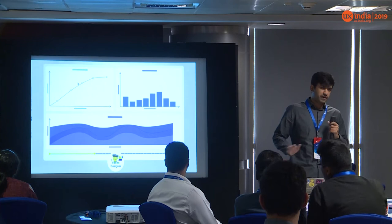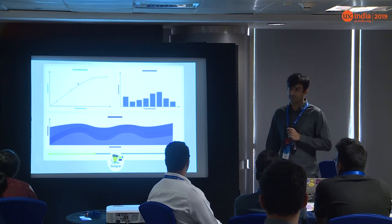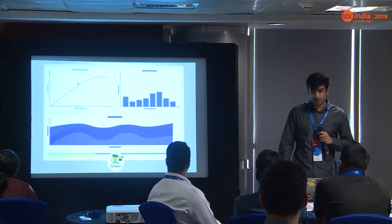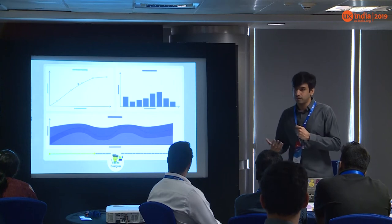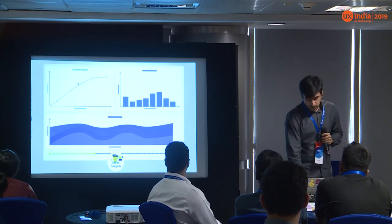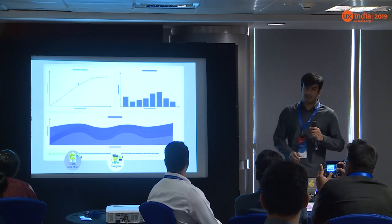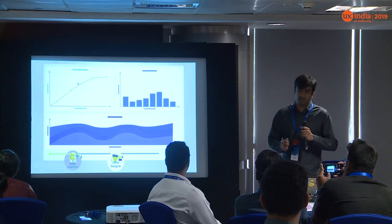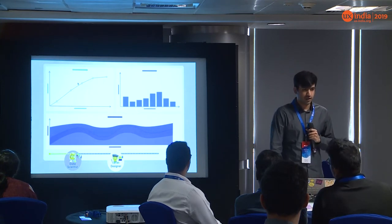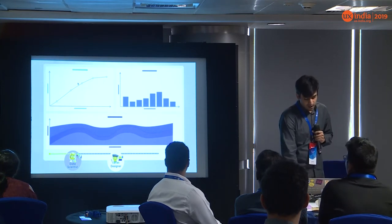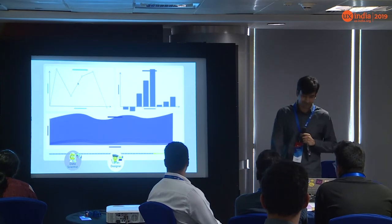Now the product is working fine, but the data scientist gets a bit more ambitious — maybe they can even speculate what the data would be down the line. The data scientist says they can put in a regression algorithm to project what this would look like down the line. But unfortunately, the thing breaks apart again.